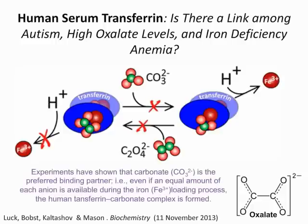As an FYI: oxalate levels (C2O4) can lead to autism or iron deficiency anemia. Carbonate is the preferred binding partner in the iron loading process, forming the human transferrin-carbonate complex.